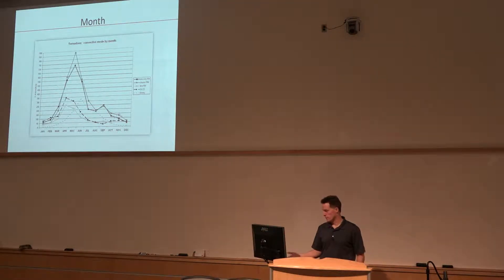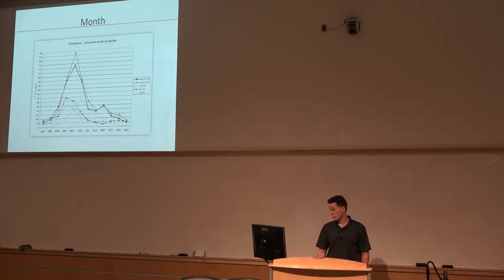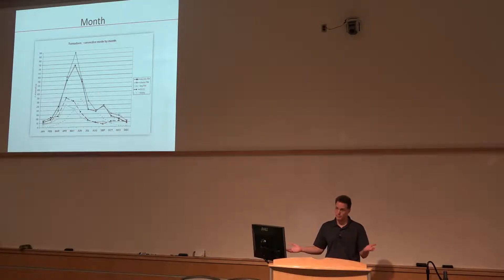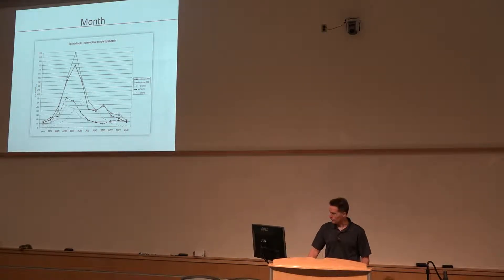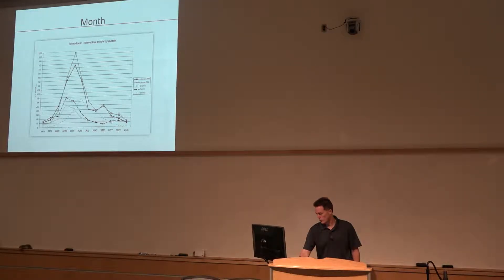Here's what it looks like when you break it down by convective mode. This would be the cluster and discrete supercells — the strong peak that occurs typically in May and June. Discrete and cluster right-moving supercells that produce tornadoes are, big shock, most common in the late spring, typically in the central United States. You can see other modes — even QLCS, which peaks a little bit earlier in the spring — and then the disorganized, which some people might informally refer to as landspout-producing storms.